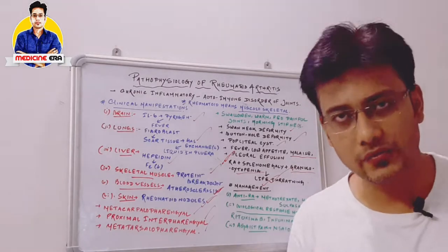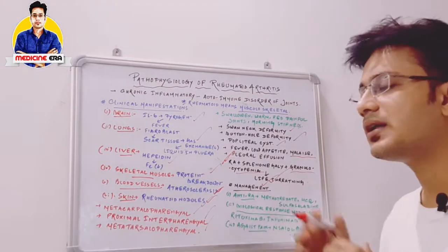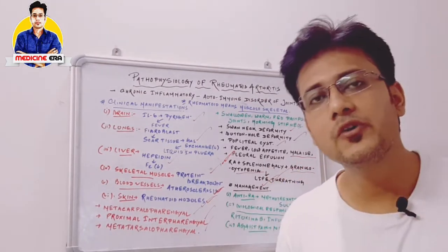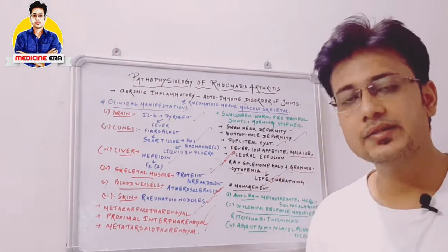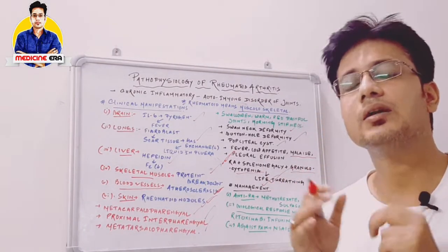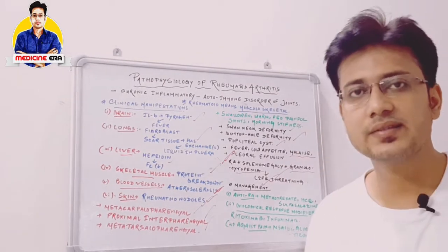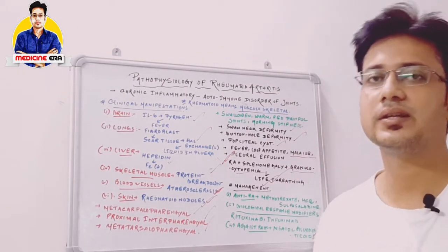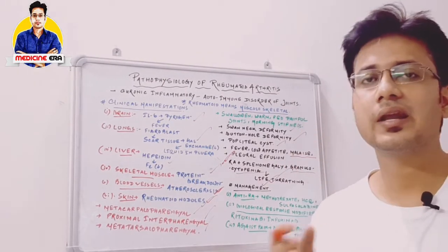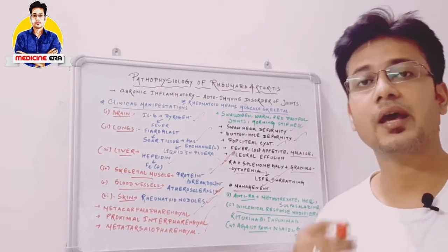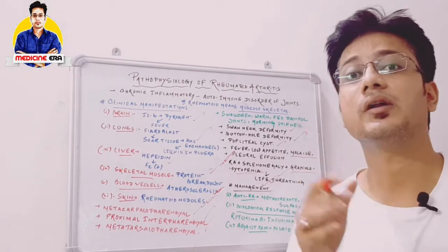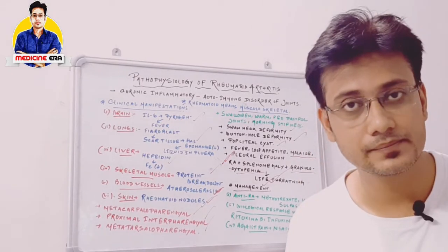These are the managements of rheumatoid arthritis. This is the total overview — you have to know the pathophysiology, pathogenesis, etiology, clinical manifestations, and management of this particular disorder.